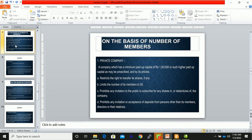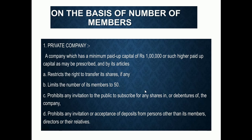In today's lecture we are discussing the other types of companies on the basis of the number of members — that how many members can be in a company. A private company has a minimum paid-up capital of one lakh, or such higher paid-up capital as may be prescribed by its articles. The number of members cannot exceed 50.